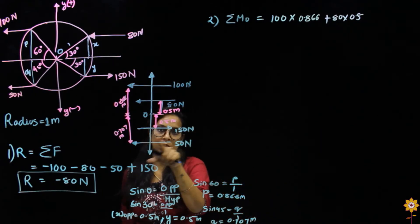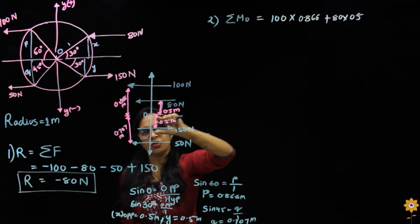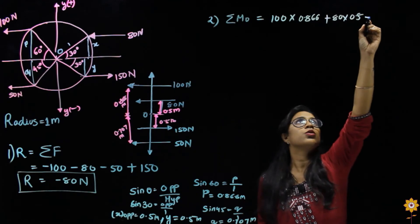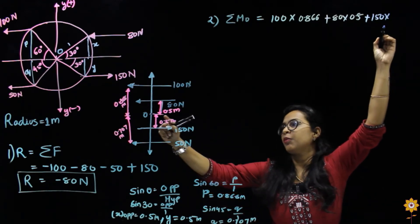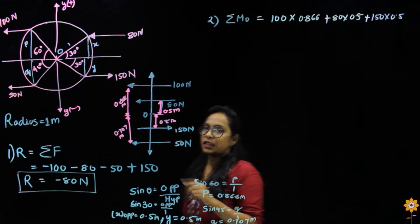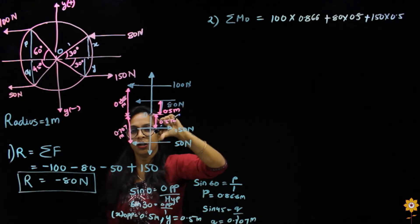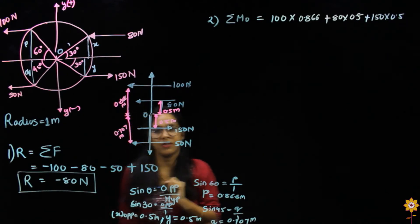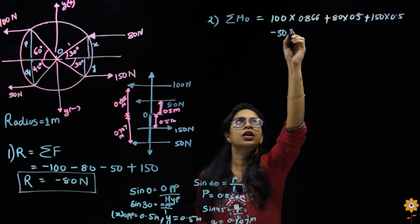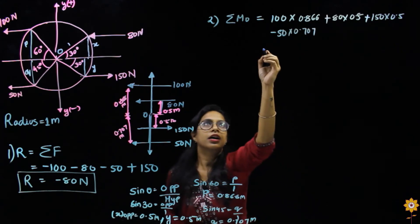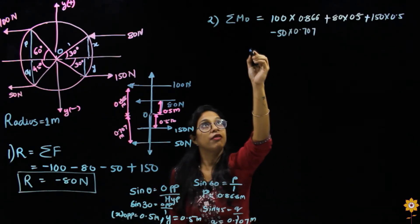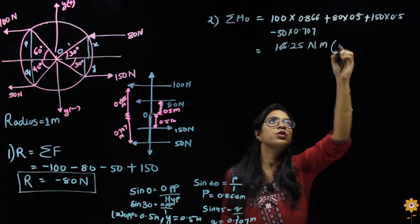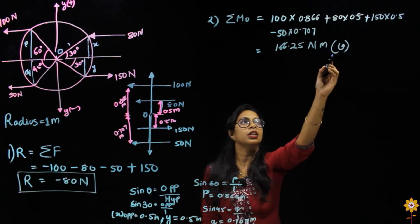The next force is 150 Newtons. From O, this force is also in the anticlockwise direction, so it is positive: plus 150 × 0.5. The last force is 50 Newtons, which from O acts in the clockwise direction — clockwise is negative — at a perpendicular distance of 0.707 meters: so minus 50 × 0.707. Calculating all terms, the total moment about O comes out to be negative 166.25 Newton-meters, which means the net moment is in the anticlockwise direction.